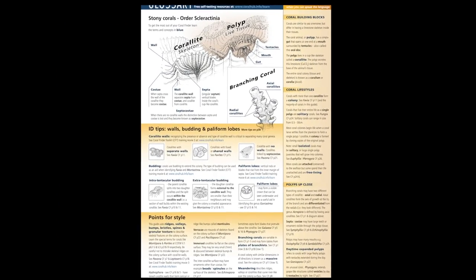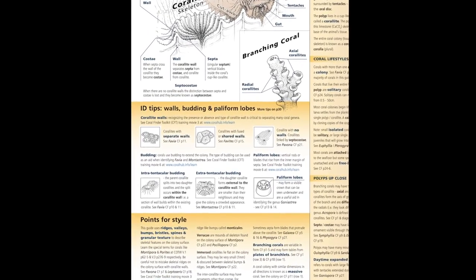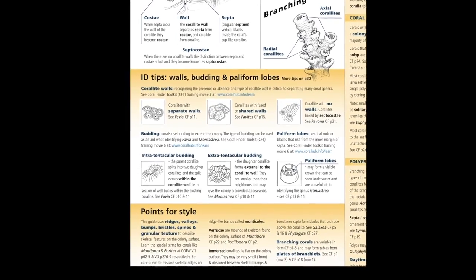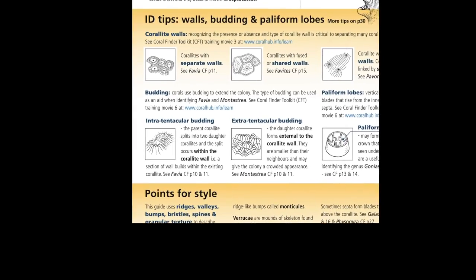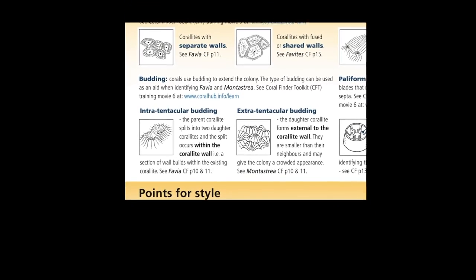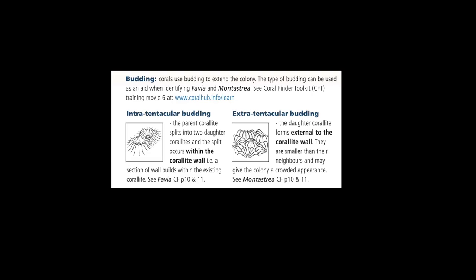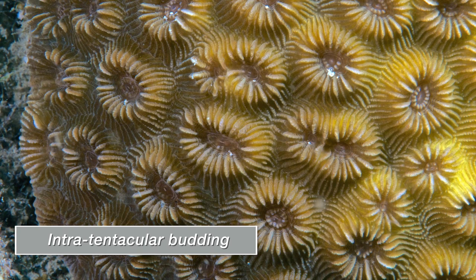All colonial corals build or clone new polyps. The coralites that these polyps build expand the coral colony. While coral budding is interesting, we don't generally use it in the coral identification process except when trying to separate the genera Fabia and Montastria. So you need to understand what budding is and when to use it as an aid to identification. There are two types of budding we need to learn: intratentacular and extratentacular. Here are some examples of intratentacular budding in the genus Fabia. Intratentacular refers to the new polyp bud forming within the ring of tentacles that surround the polyp mouth — the parent polyp splits into two daughter polyps.